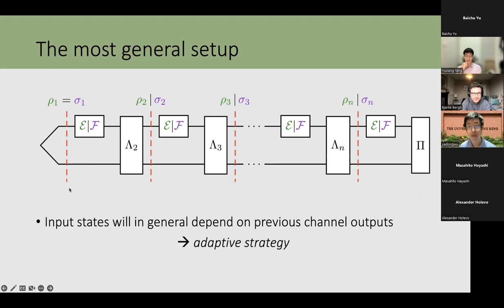I'll use the notation ρ_i or σ_i for the state before the i-th channel use — ρ_i if the black box is E, σ_i if it's F. For the first use they're the same, but later they diverge based on the actual channel. This is a fairly complicated setup because of the essentially arbitrary preparation channels between each use.